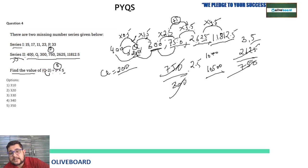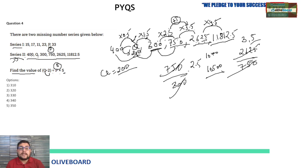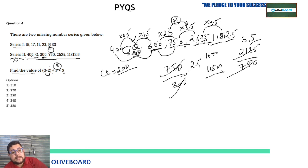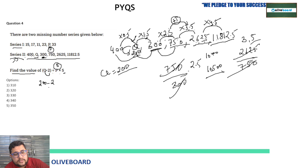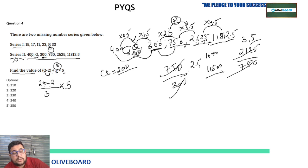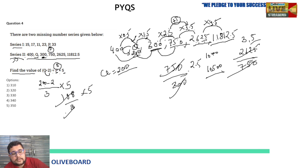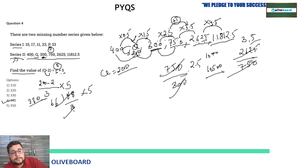Now computing (Q − 2) ÷ P × 5 with Q = 200 and P = 3: (200 − 2) ÷ 3 × 5 = 198 ÷ 3 × 5 = 66 × 5 = 330. So the final answer is 330.